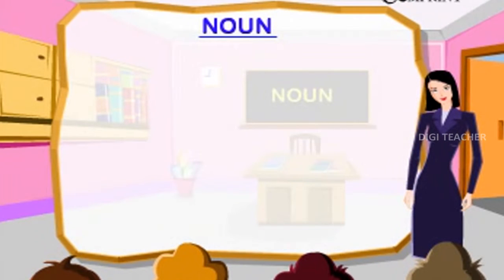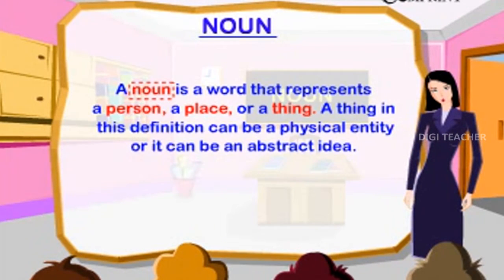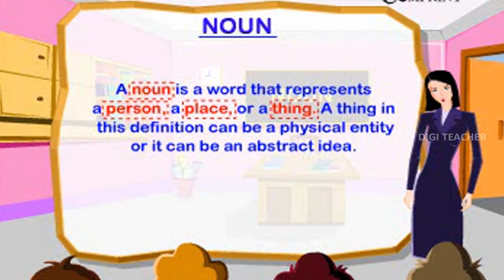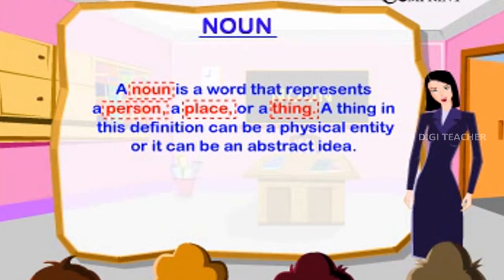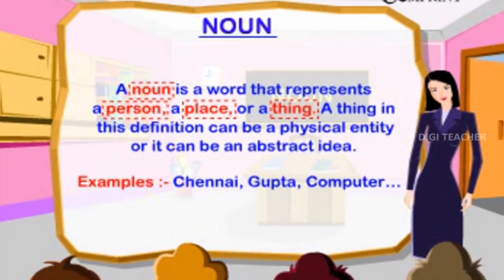A noun is a word that represents a person, a place, or a thing. A thing in this definition can be a physical entity or it can be an abstract idea.